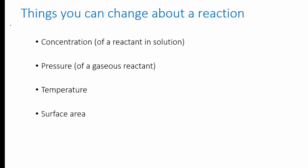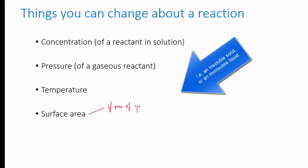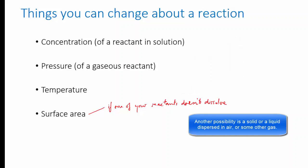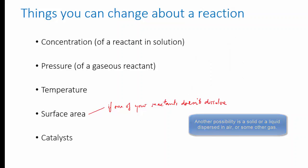The surface area if you've got a solid reactant, or if you have two immiscible liquid reactants, so an oil and a water that need to be shaken up together, the surface area between those two has an effect on the rate. And the final thing is the presence of a catalyst.